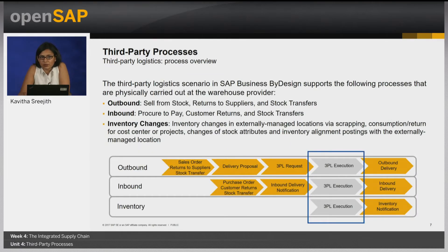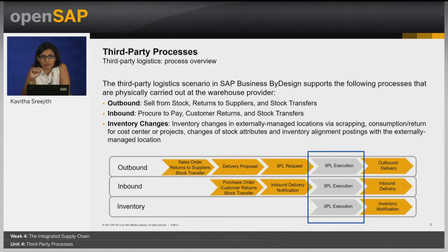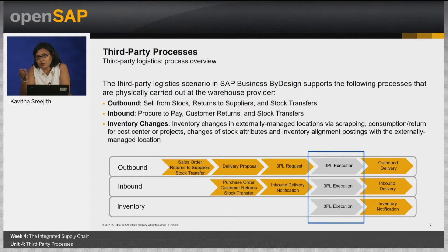The 3PL scenario supports various processes including inbound, outbound, and inventory changes. The steps in each of these processes always remain the same — the only difference is that you are now working with a 3PL site. For example, in inbound processing, the purchase order created would have the ship-to location as a 3PL site instead of any other site, but the rest of the steps remain the same as in a procure-to-pay process.